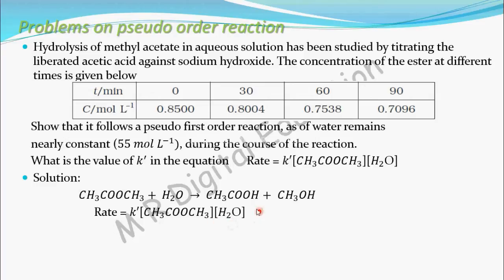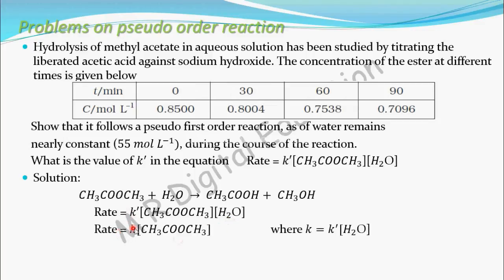Since [H₂O] is constant, it is also constant. Taking these two constants together as one rate constant k, where k = k dash × [H₂O], the rate equation becomes rate = k × [CH₃COOCH₃]. Now the power is one, so this is a first order reaction.